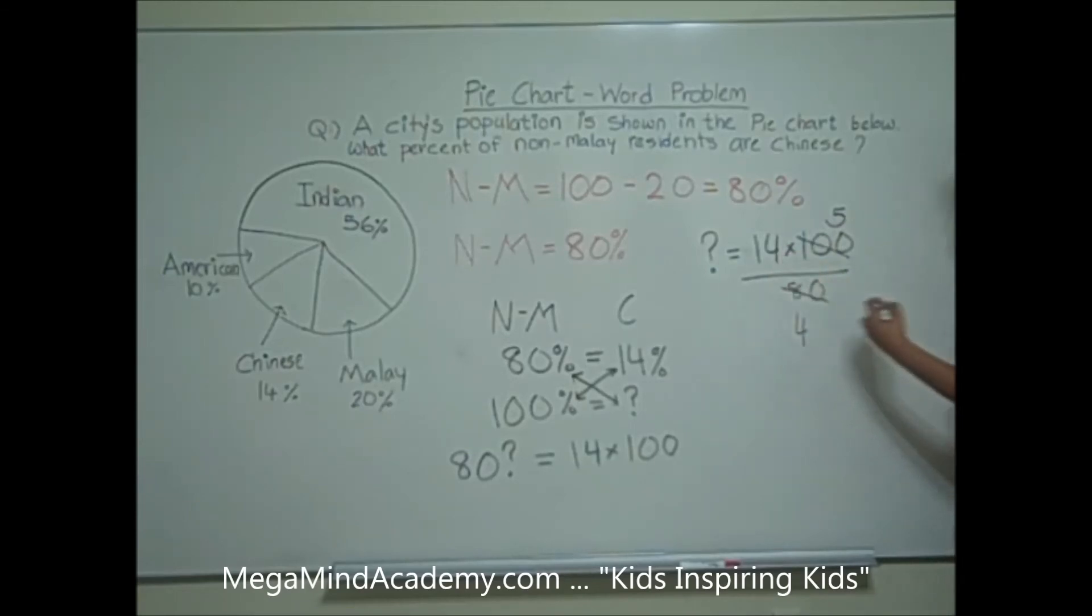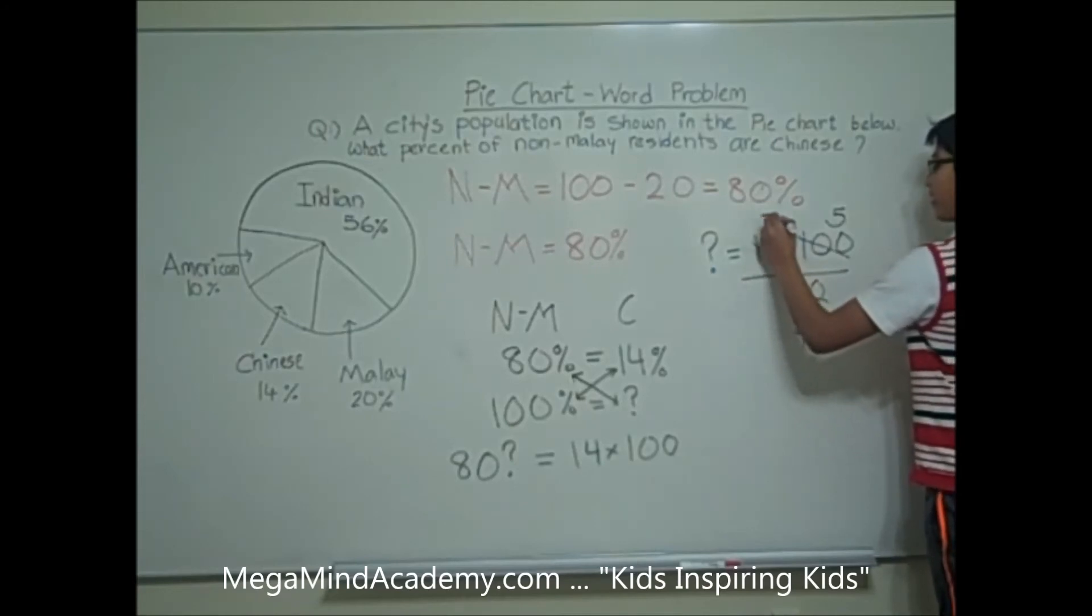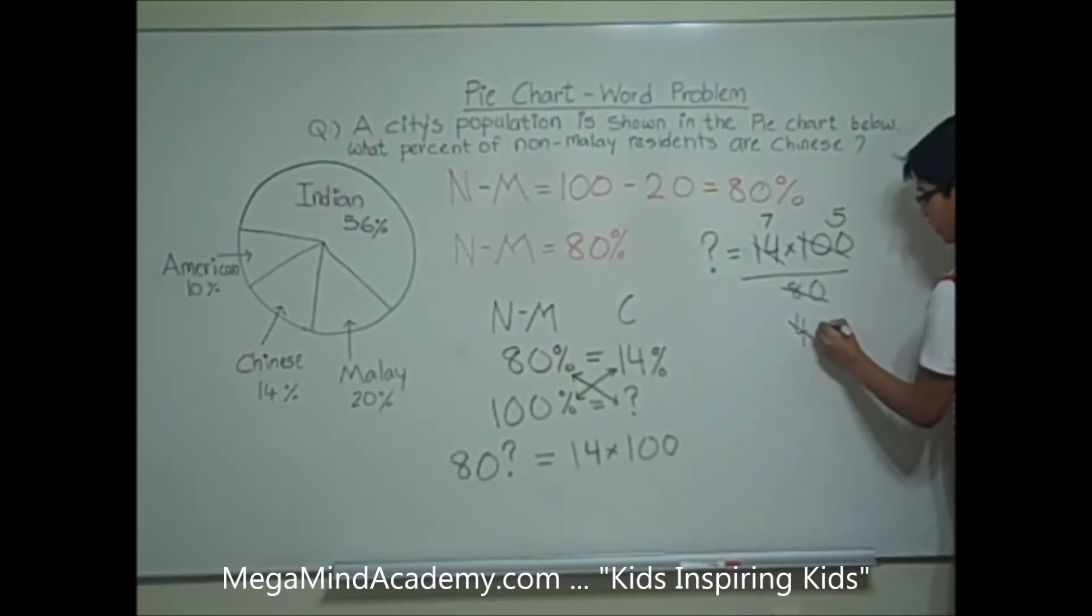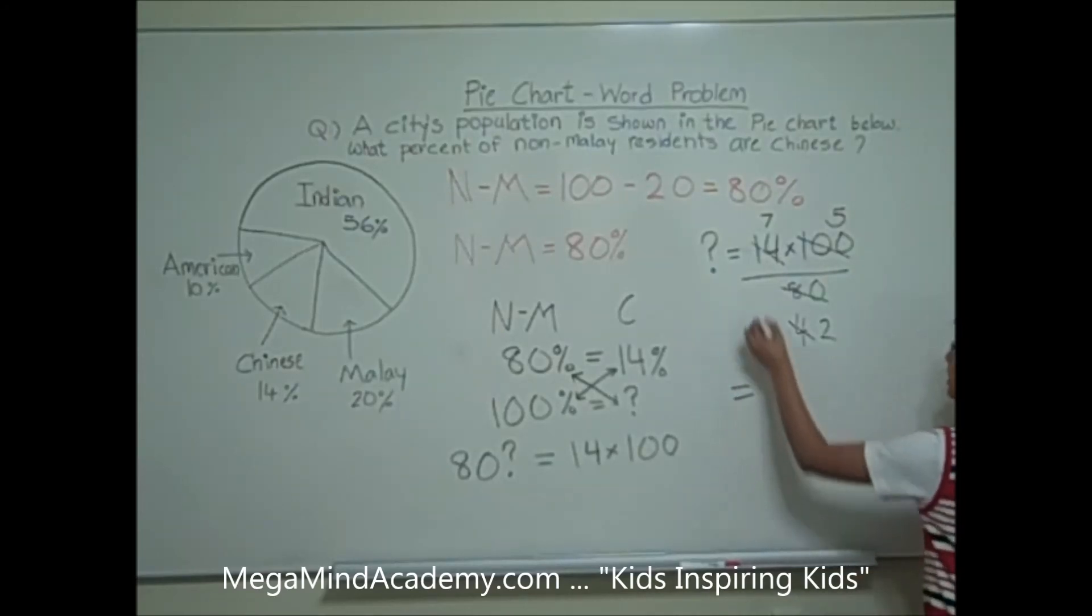14 and 4 are both divisible by 2. 14 divided by 2 is 7, and 4 divided by 2 is 2. So, we get 7 times 5 is 35 over 2, which equals 17.5%.